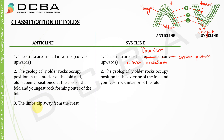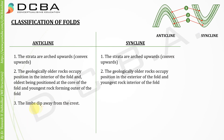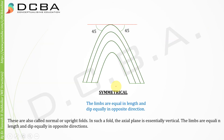The limbs dip away from the crest — the crest is at the top and the limbs go away from it. If this is the trough, then the limbs are dipping towards the trough.